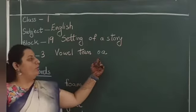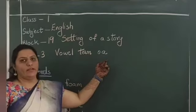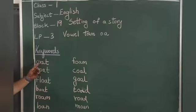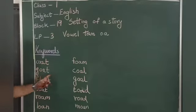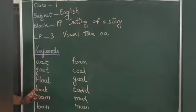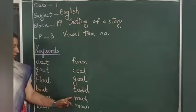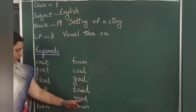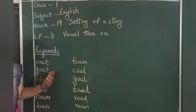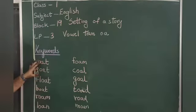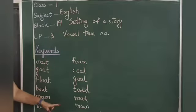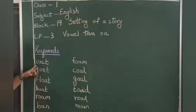Vowel team OA. These words are: coat, boat, float, roam, loan, foam, coal, bowl, toad, road, moan. Have you seen some similarities in these words? OA. Each word has OA.